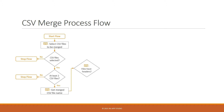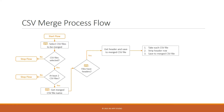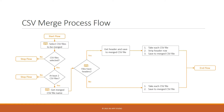The next important point is to understand whether those CSVs have headers or not. If they have headers, we'll need to do an extra step: take one of those CSV files, strip out the header, and save it to the merged CSV file. Then go through each CSV file, strip out the header row, get only the data rows, and save them to the merged CSV file. If there are no headers, the process is simpler: take each CSV file, take the data, and save it to the merged CSV file. That would be the end of our flow.